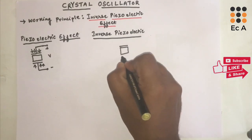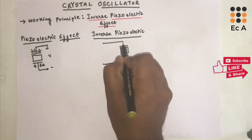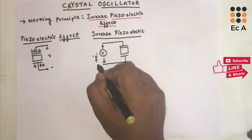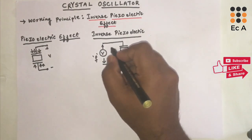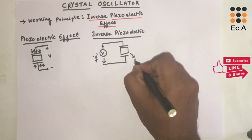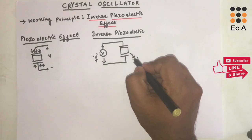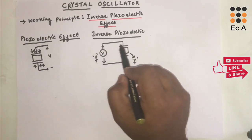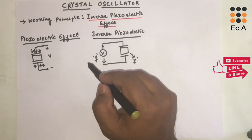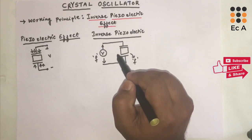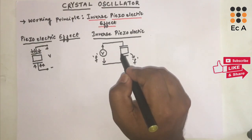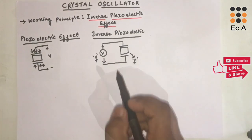Inverse piezoelectric effect is the reverse operation of piezoelectric effect. If a certain amount of voltage is applied to the terminals of the piezoelectric material with frequency f, the piezoelectric material will also vibrate with the same frequency. This effect is known as inverse piezoelectric effect — whenever a voltage of some frequency is applied at the terminals of a piezoelectric material such as a crystal, the material will vibrate at the same frequency f.